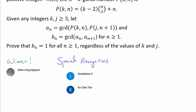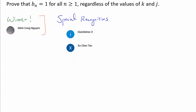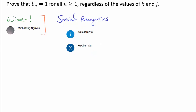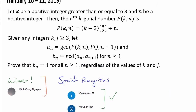Before we go on, I'd like to recognize three people. First is Minh Cong Nguyen, who was the very first person to post a correct solution to this challenge problem last week. We also have two more people who deserve special recognition for their exceptionally elegant solutions — their solution is much better than the solution I personally had in mind, which was very algebra-intensive. The solution I'm going to present today is a slight modification of the proof that iQuickthrowX and Xu Chen Tan independently developed. A tremendous shoutout to both of them. So without further ado, let us begin.